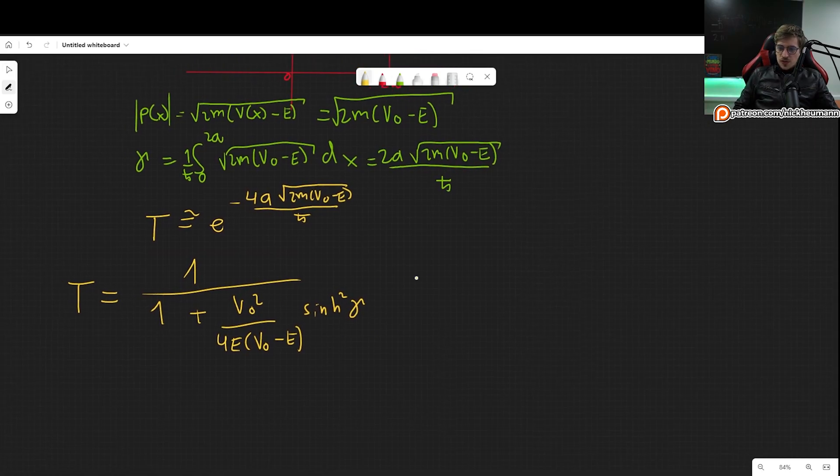Let's compare with the result that we found previously. What we had found is that the transmission coefficient, now this is the exact form, is T = 1/(1 + V0²/(4E(V0-E)) sinh²(γ)). So that is the result. And how do we compare these things? It isn't immediate. We can't just look at them and say they are equivalent or not.